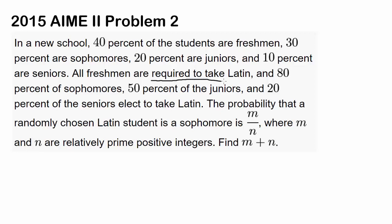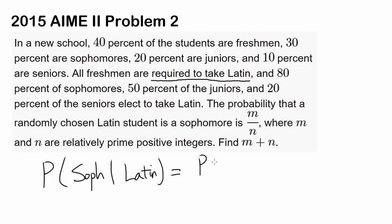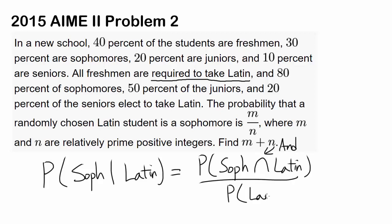All freshmen are required to take Latin, so 100% of the freshmen are going to take it. 80% of sophomores, 50% of the juniors, and 20% of the seniors elect to take Latin. The probability that a randomly chosen Latin student is a sophomore is M over N. We want to find the probability that a randomly chosen Latin student is a sophomore — that is, P(sophomore | Latin). By conditional probability, that equals P(sophomore AND Latin) divided by P(a student takes Latin).